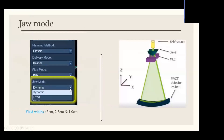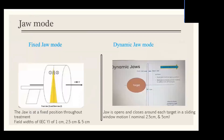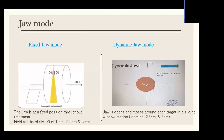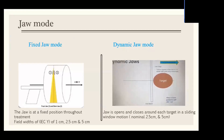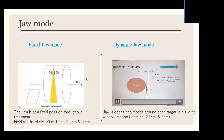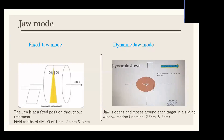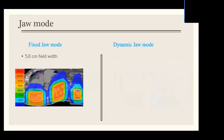A few notes about the jaw mode: the jaw in the tomo system moves in the Y direction, defining the longitudinal field size. We have three nominal field sizes: 5 cm, 2.5 cm, and 1 cm. Notably, the MLC also moves in the Y direction but defines the beam laterally. There are two modes — fixed and dynamic jaw. In fixed jaw mode the jaw is fixed throughout treatment, while in dynamic jaw mode the jaw moves to follow target motion in a sliding window style.